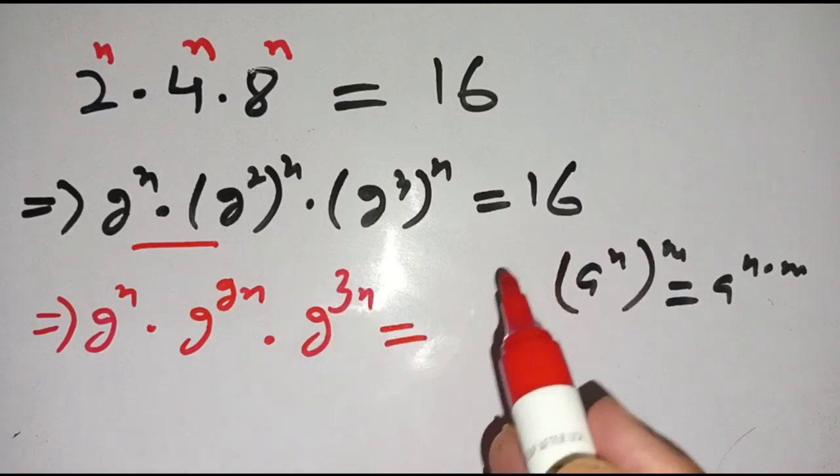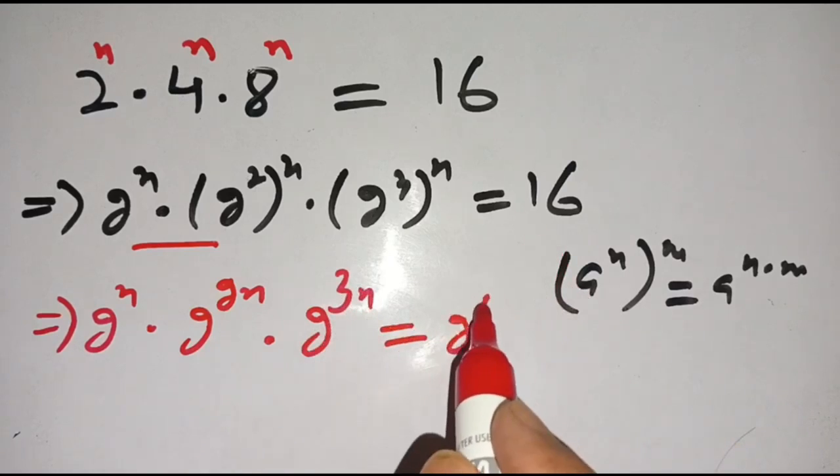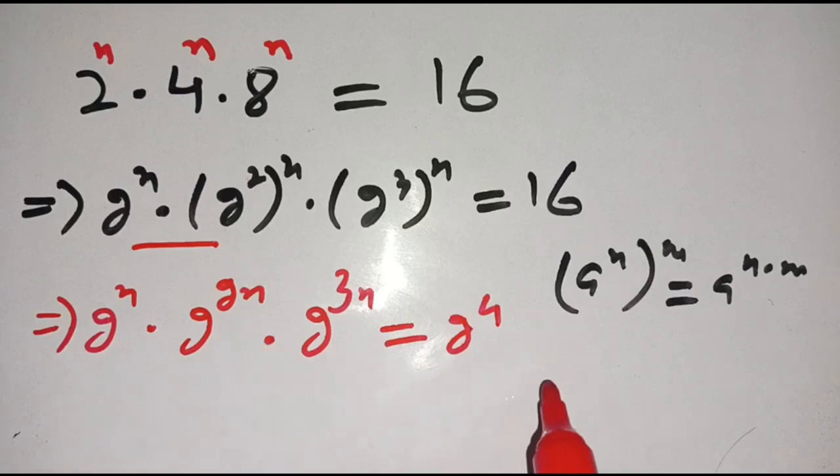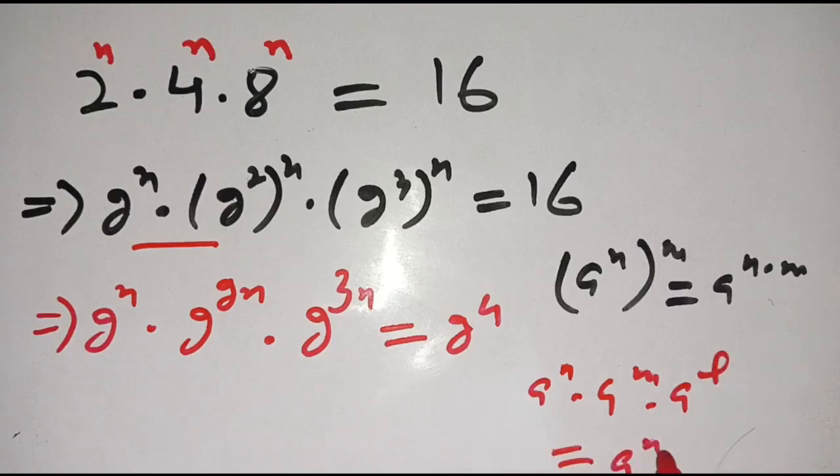And we know that if a power n times a power m times a power l, then it is equal to a power n plus m plus l. This means that when bases are the same, powers can be added.